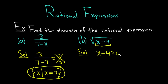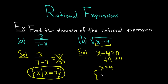Whenever you have a square root and you're looking for the domain, just take whatever's inside the square root and set it greater than or equal to 0. Then we can add 4 to both sides — plus 4 plus 4 — and so we get x greater than or equal to 4. It's the set of all x such that x is greater than or equal to 4.